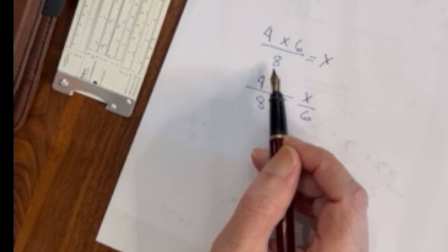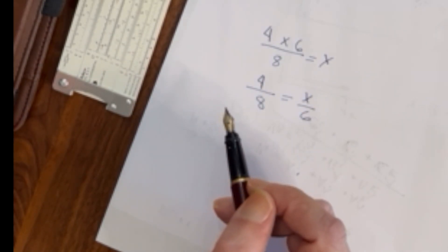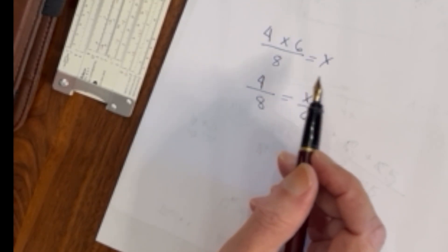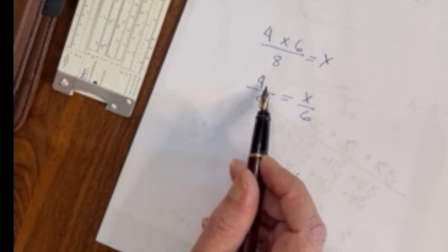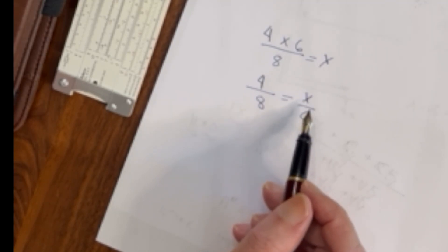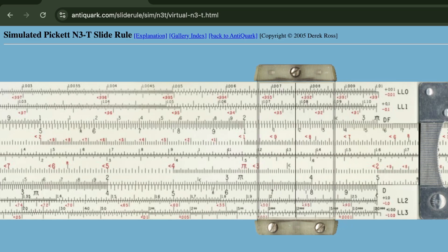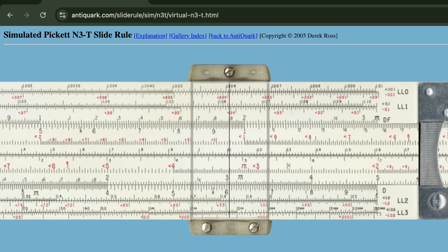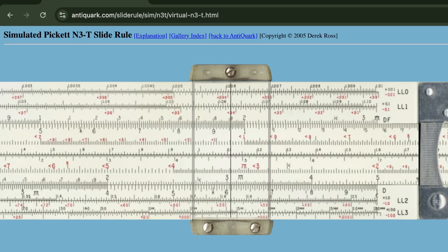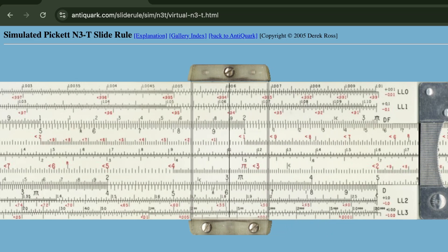Let's use an example. Say we want to multiply 4 by 6 and then divide it by 8. Well, 4 times 6 divided by 8 equals x is the same as 4 over 8 equals x over 6. So let's see how we set that up on the slide rule. We put the 4 on the C scale directly over the 8 on the D scale. Then all we have to do is come down here to the 6 on the D scale and read what the value of x would be directly above it: 3. So we set up a table, and then just simply by moving the cursor, we get our answer.